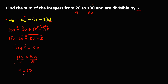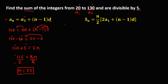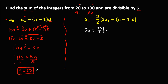Therefore, there are 23 terms divisible by 5 from 20 to 130. Then, to find the sum of the integers using this formula: S sub n equals n over 2 times 2 times a sub 1, and a sub 1 is 20, plus n minus 1 times the common difference, that's 5.